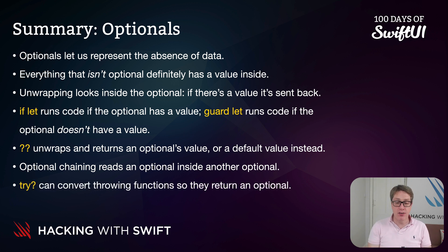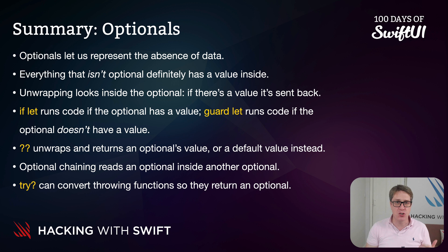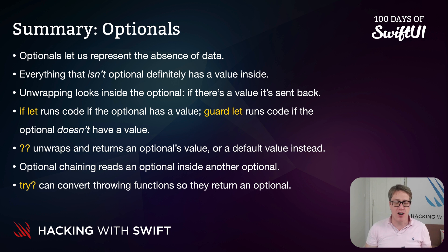If a function can throw errors, we can convert that into an optional using `try?`. This will return either the regular return value from the function, or nil if the function threw any errors. But if you want to know what those errors were and handle them uniquely, you can't use `try?` — use a regular `do-try-catch` block instead.